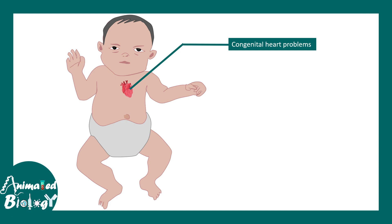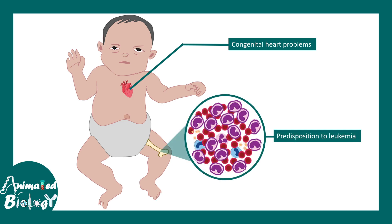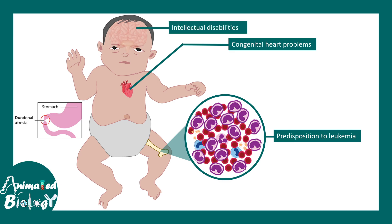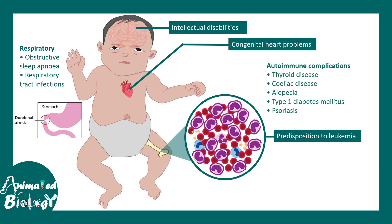These babies are often born with congenital heart problems and are predisposed to develop leukemia. They have intestinal issues — duodenal atresia is pretty common. There are intellectual disabilities and a high risk that they will not develop proper language or higher-order cognitive skills. There can be respiratory challenges like obstructive sleep apnea and respiratory tract infections, as well as autoimmune complications like thyroid disorder, celiac disease, alopecia, and psoriasis.